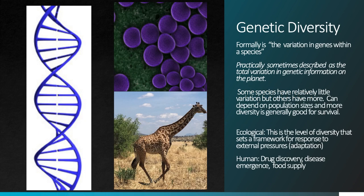The small scale of biodiversity is genetic diversity. Formally, genetic diversity is the variation of genes within a particular species, but sometimes when you hear people talk about genetic diversity it's in the context of the total variation in genetic information on the planet. While that's not the correct formal definition of genetic diversity, it is an important concept to be aware of.